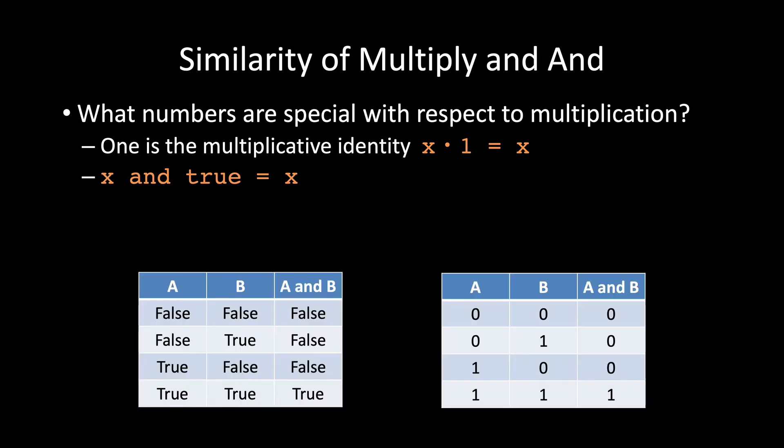When we look at the truth table for and using zeros and ones, we see that this identity also applies for and. With multiplication, zero has its own property where zero times anything is always zero. We can see that this property holds in the truth table for and as well. Or in other words, x and false is always false.